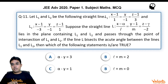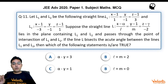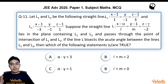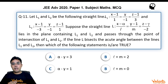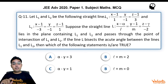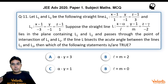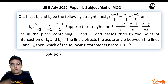Lines L1 and L2 are given by: L1: (x−1)/1 = y/(−1) = (z−1)/3, and L2: (x−1)/(−3) = y/(−1) = (z−1)/1. A third line L: (x−α)/l = (y−1)/m = (z−γ)/(−2) lies in the plane containing L1 and L2, passes through their point of intersection, and bisects the acute angle between L1 and L2. We need to determine which statements about α, γ, l, and m are correct.